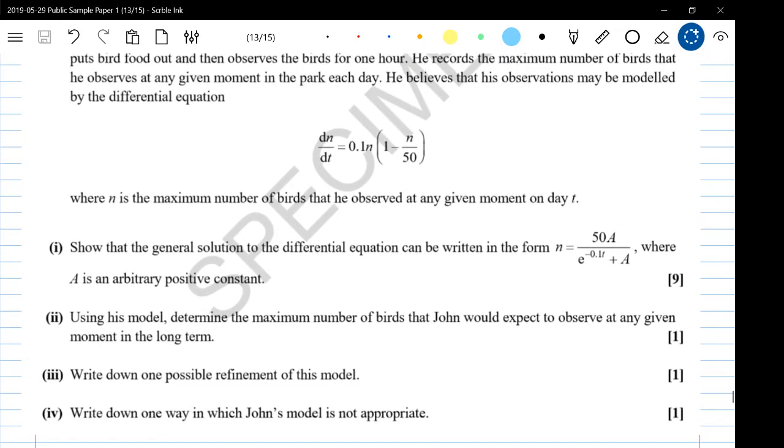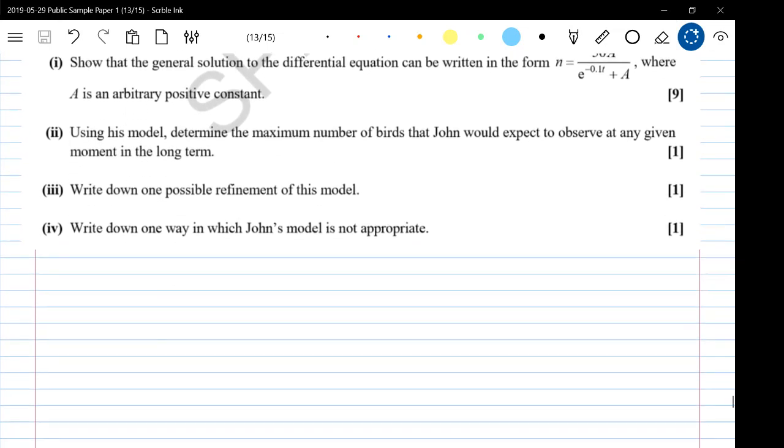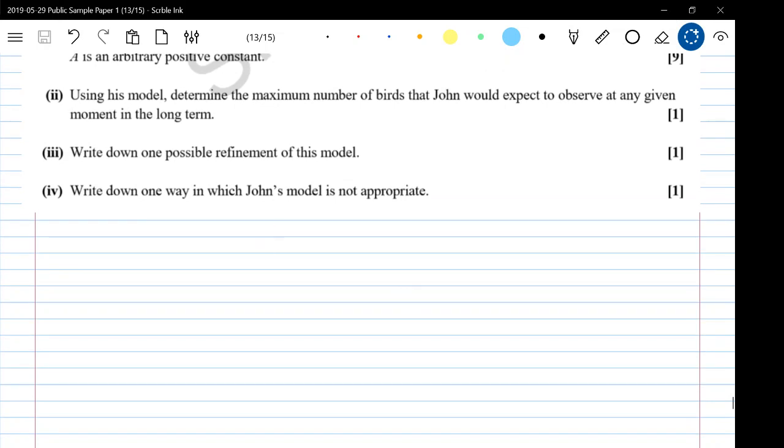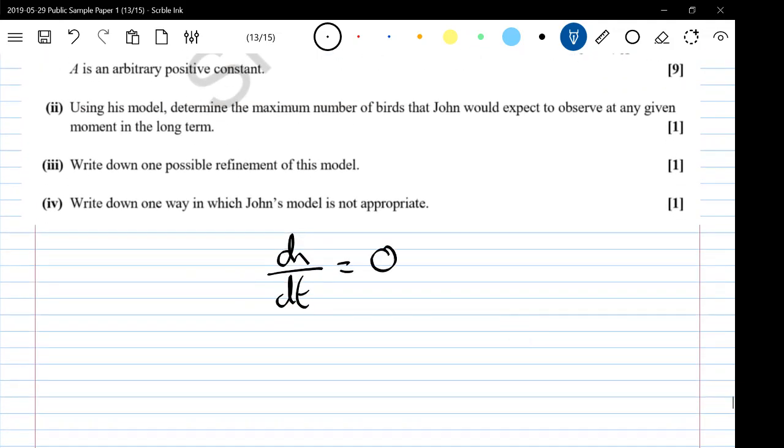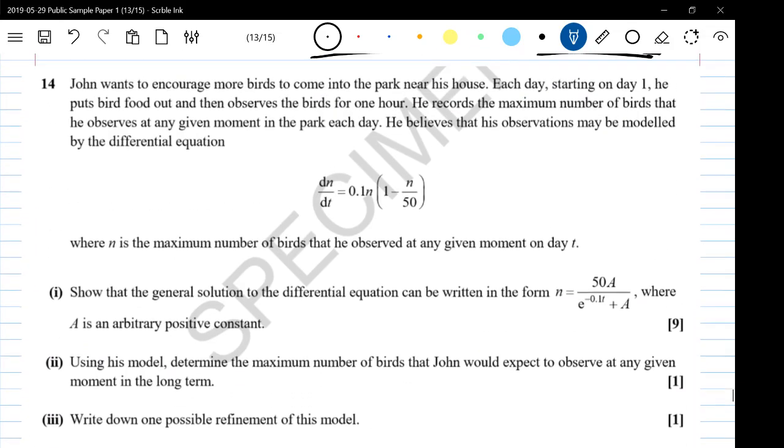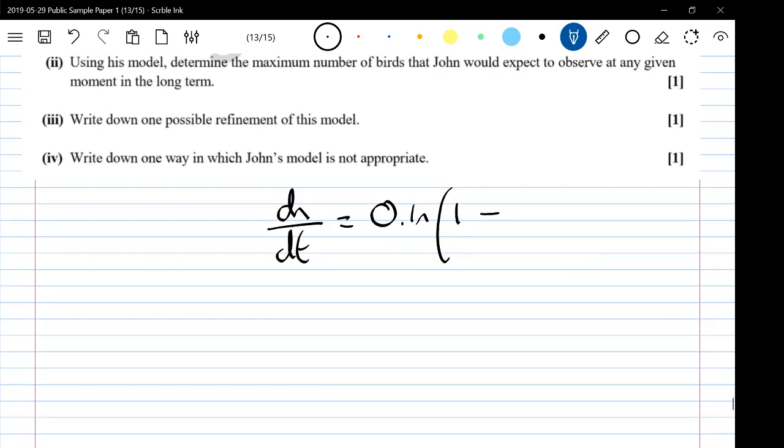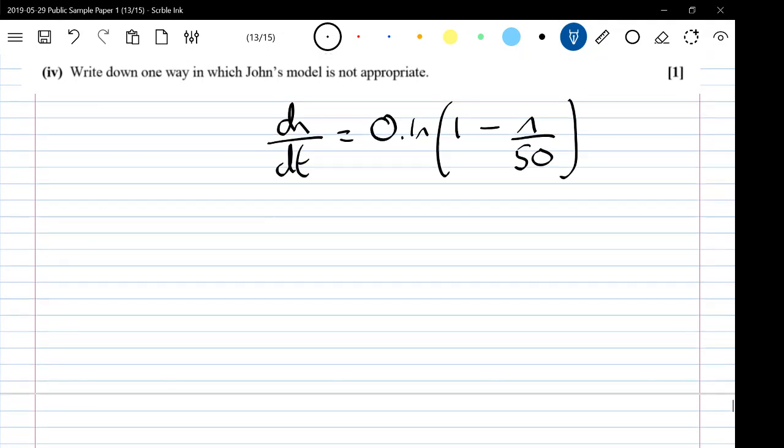We've got a differential equation and we are asked to find the general solution of it. So we start with dn/dt equals 0.1n times 1 minus n over 50. We have to solve this equation so we're going to separate the variables and integrate. We need to get everything involving n over to the left, so this is 1 over n times 1 minus n over 50.